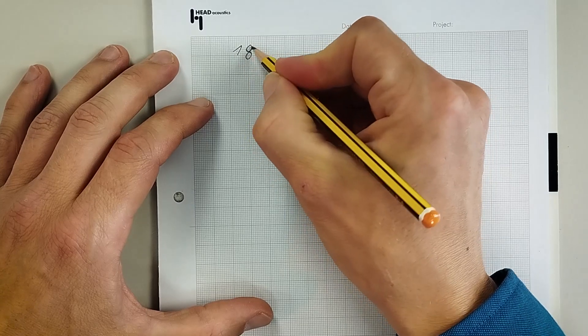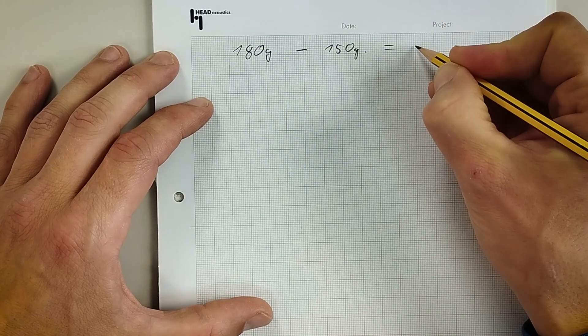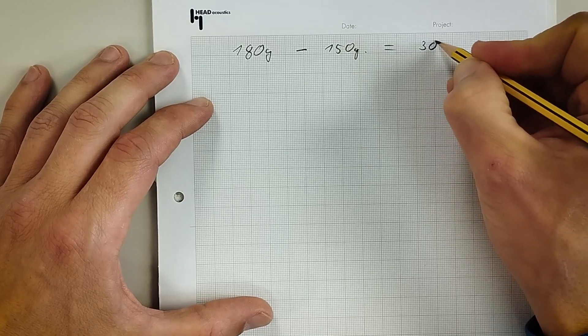If you want to compare maybe the weight of this smartphone with the weight of this smartphone, this is 150 grams and this is a little bit bigger, weighs 180 grams. In comparison, I would say, well, this has 30 grams more weight. So what I do by instinct, I subtract 180 minus 150 and the difference is 30 grams.